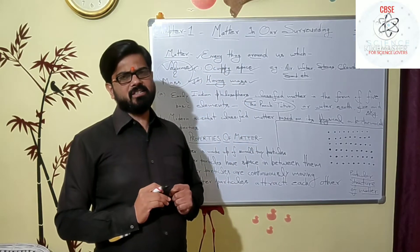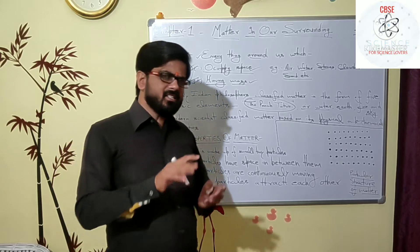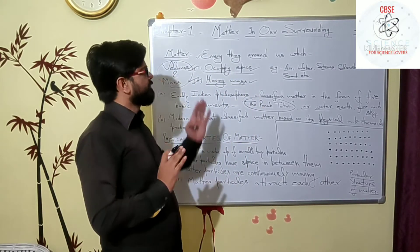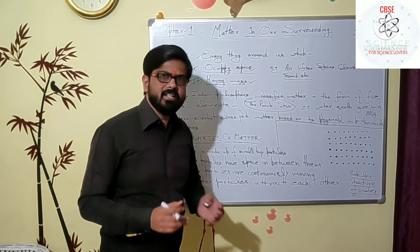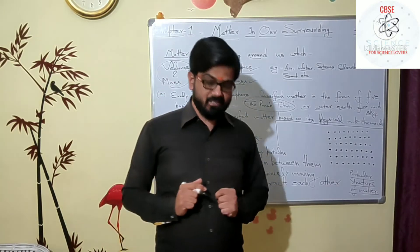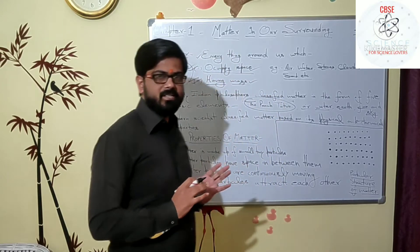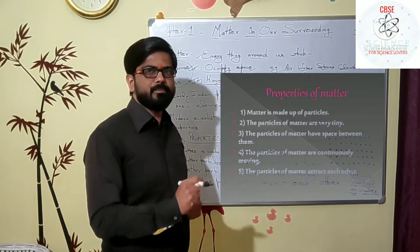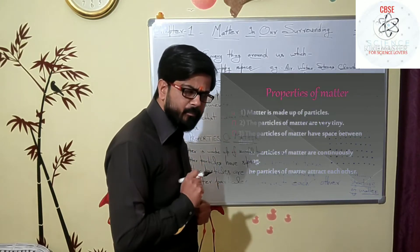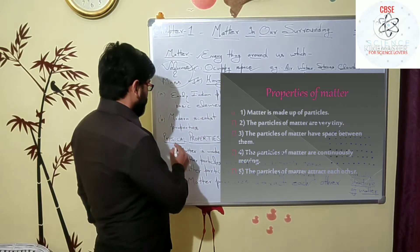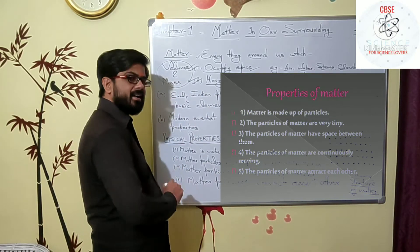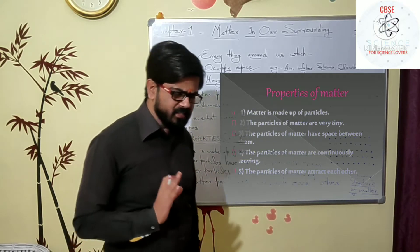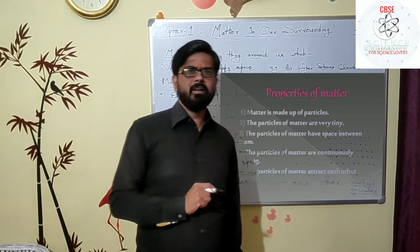Matter which occupies space has volume, and matter which has mass — these two are the special features that specify matter. Now let us discuss some physical properties of matter. The first physical property of matter is that all matter particles are made up of small, tiny particles.